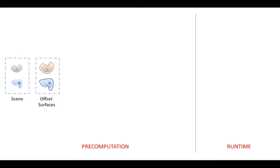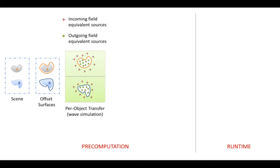Next, we compute an offset surface around each object. Local wave simulations are then performed on each object to compute its per-object transfer function. This function relates an arbitrary incident field to the resulting scattered field using an equivalent source formulation.